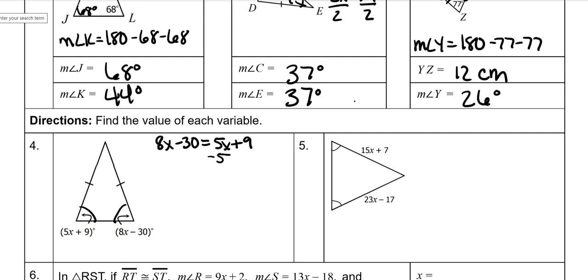So subtract 5X from both sides. You get 3X minus 30 is equal to 9. Add 30 to both sides. 3X is equal to 39. Divide by 3, and that means X is 13.